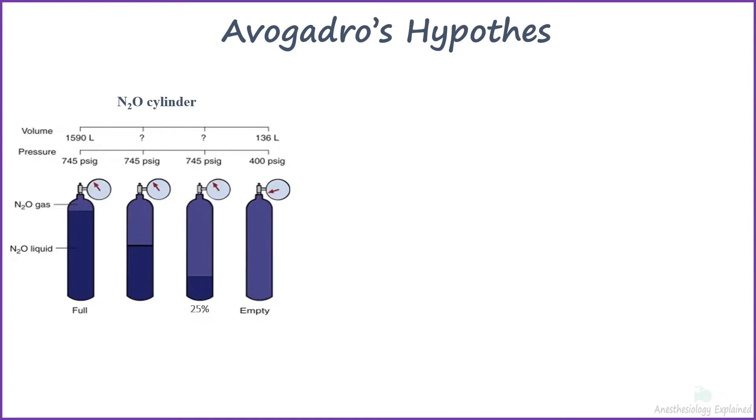Boyle's Law and the conversion factor formula can be applied to cylinders containing a gas in a pure gaseous form. Calculations for nitrous oxide are only applicable once the pressure drops below 745 psi due to the presence of liquid and gaseous forms.